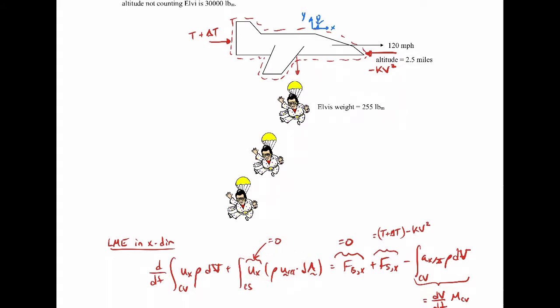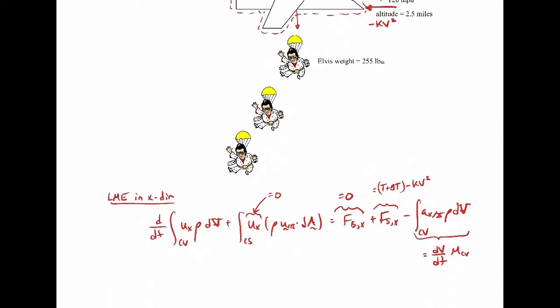There's nowhere else where we have x momentum leaving. In reality, a jet engine would provide thrust as a result of a momentum flux, but we're lumping that and treating it as an equivalent force acting on the aircraft. So there's nothing else here we have to include.